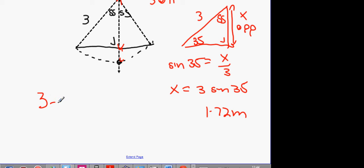Take 3 meters minus 1.72 meters and what do we get? 1.28 meters. That is the difference in the heights.